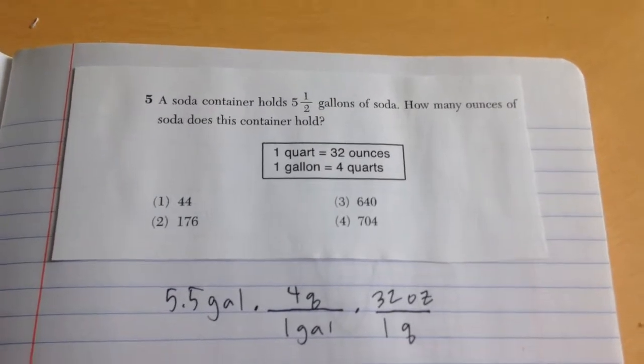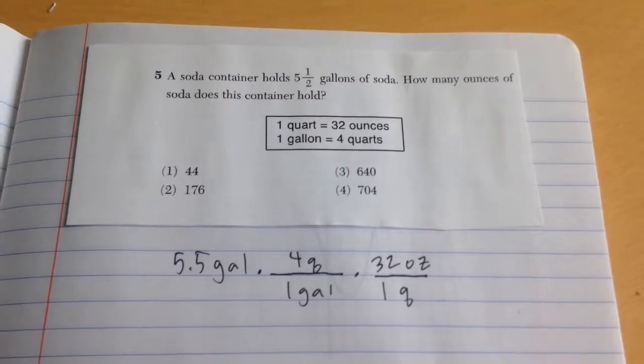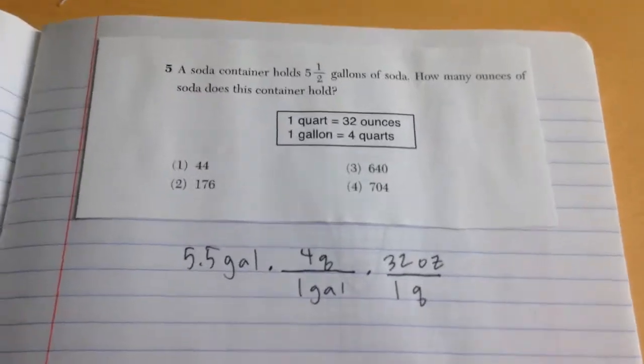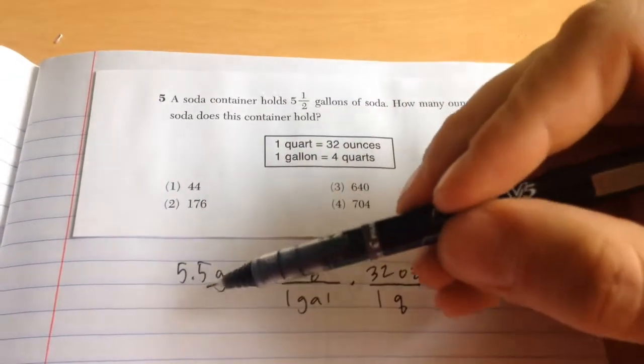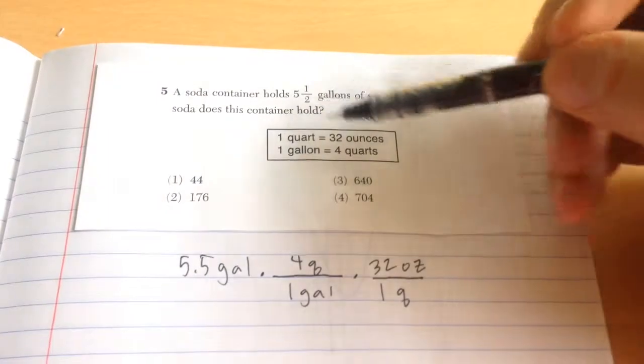A soda container holds 5.5 gallons of soda. How many ounces of soda does this container hold? Now if I were to use dimensional analysis, I would say 5.5 gallons.